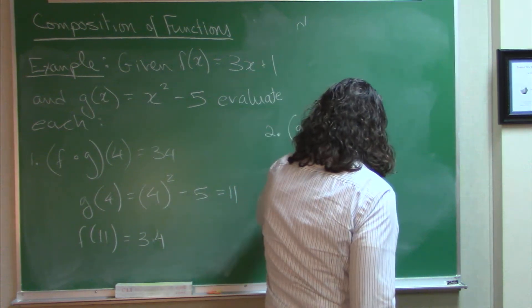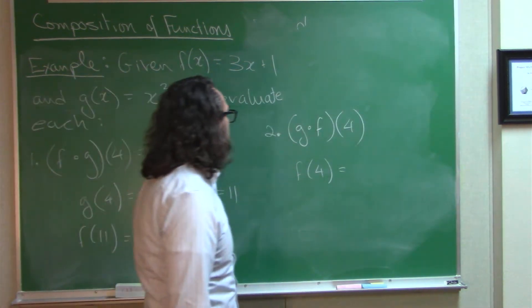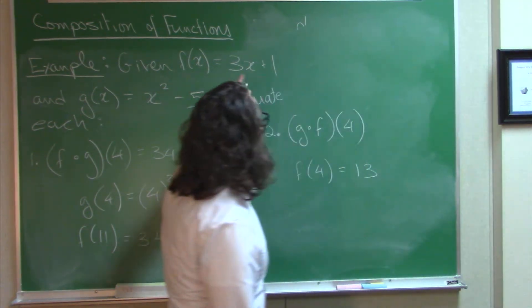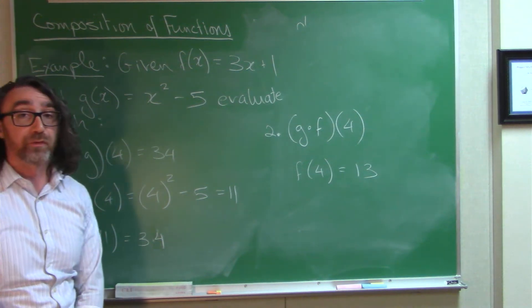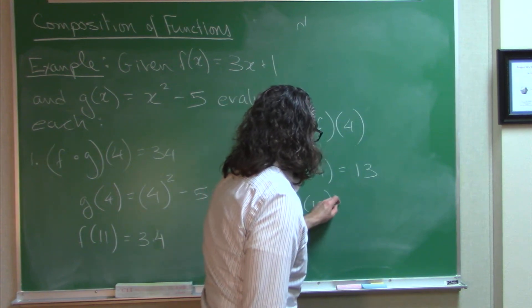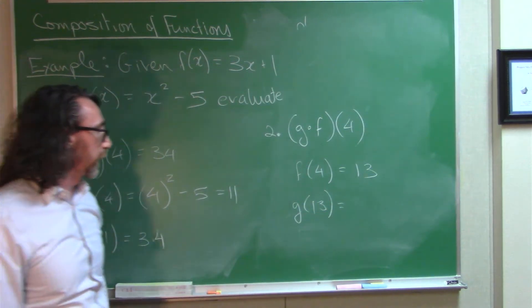Okay, so, we're applying F of 4 first. So, this gives me 13, right? 3 times 4 is 12 plus the 1 is 13. Then I take that 13 and I use it in the function G. That says to square and then subtract 5.